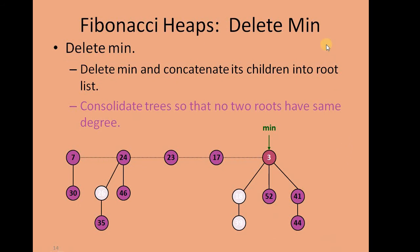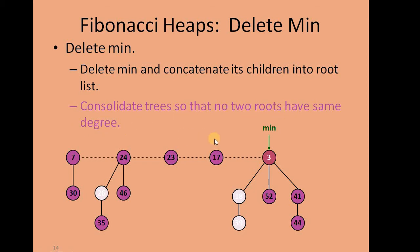The next is the delete min operation. We need to perform the deletion of the minimum element, which is straightforward because we have a direct pointer to the min element of the Fibonacci Heap. We extract the min using that pointer, and the children of the deleted node are merged into the root list. Then we consolidate the trees so that no two roots have the same degree — this is called the consolidation step.